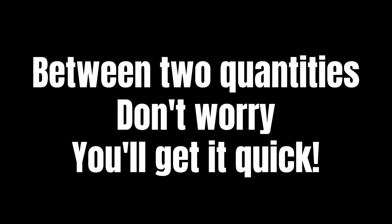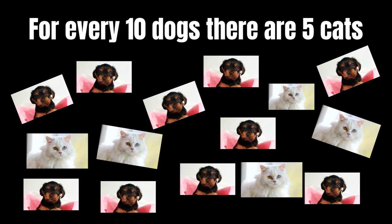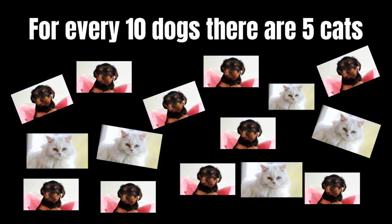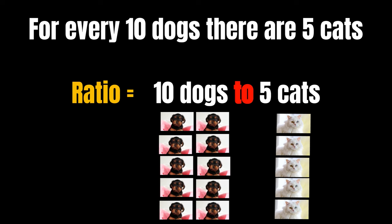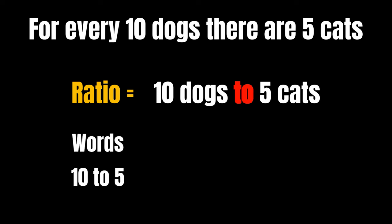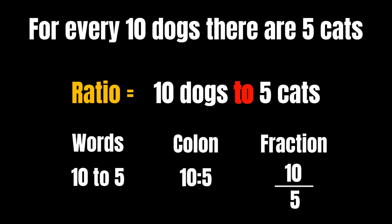Don't worry, you'll get it quick. For every ten dogs, there are five cats in the world alive. You would say the ratio is ten to five. Write it with words, with a colon, or looking like a fraction.